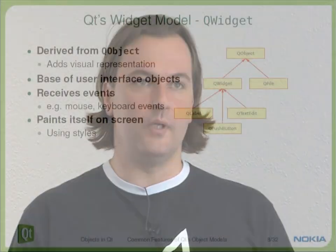QObject takes care of pretty much everything that the Qt object model provides, except the visual representation. For that, we have QWidget. QWidget inherits QObject and has the same features — memory management, signals and slots, and everything we mentioned earlier. It adds just the visual representation. A QWidget is always something that will show up on your screen when it's visible. Therefore, QWidget is the base class for every visual component that you're writing yourself. Qt comes with a lot of widgets — they all inherit QWidget — and if you're making your own widget, you will directly or indirectly inherit QWidget as well.